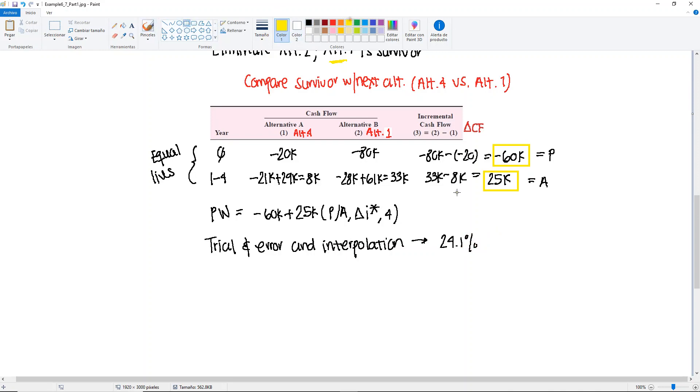This is a value that we need, and we're going to compare the 24.1% to a given 12% minimum attractive rate of return. In our case, it is greater.